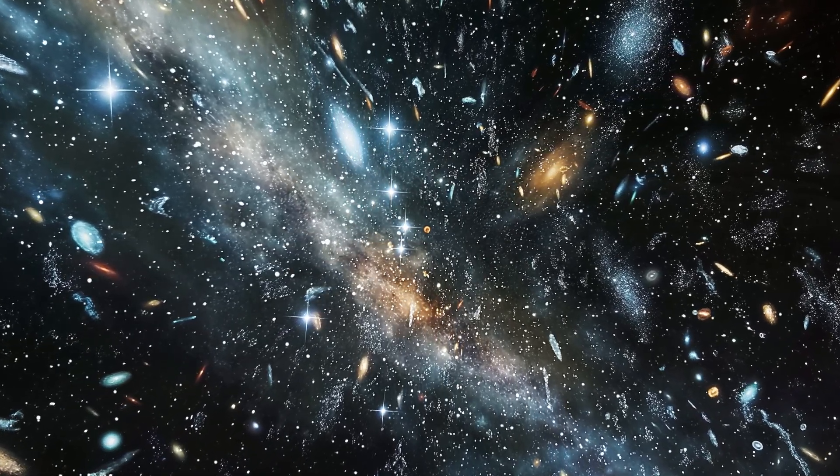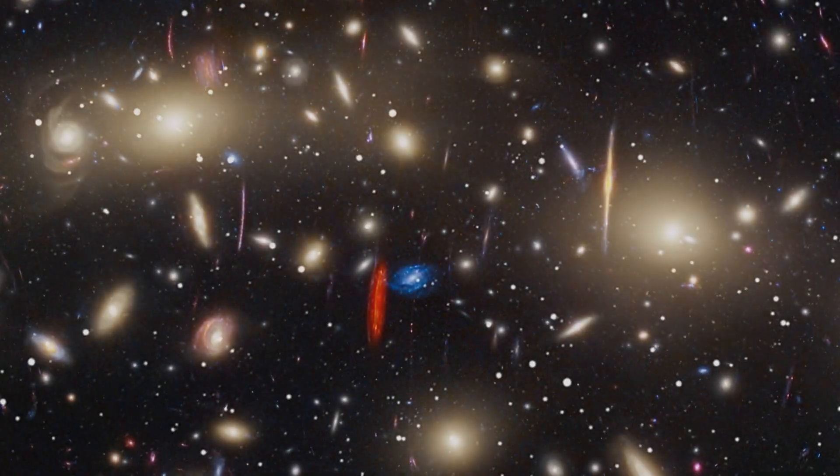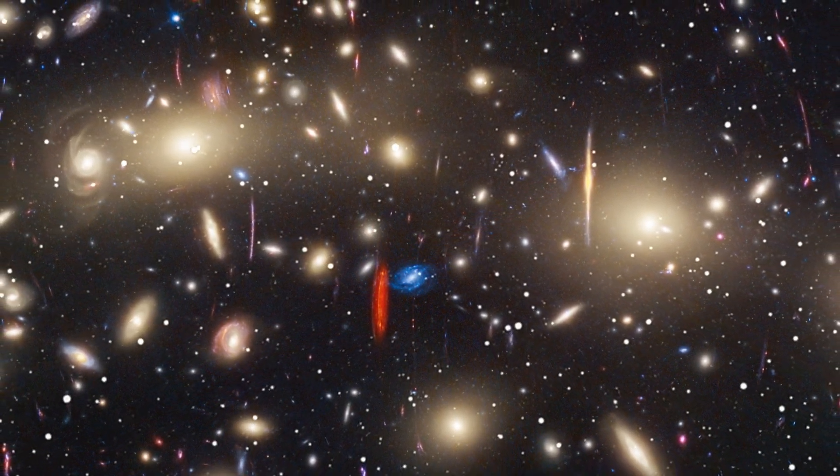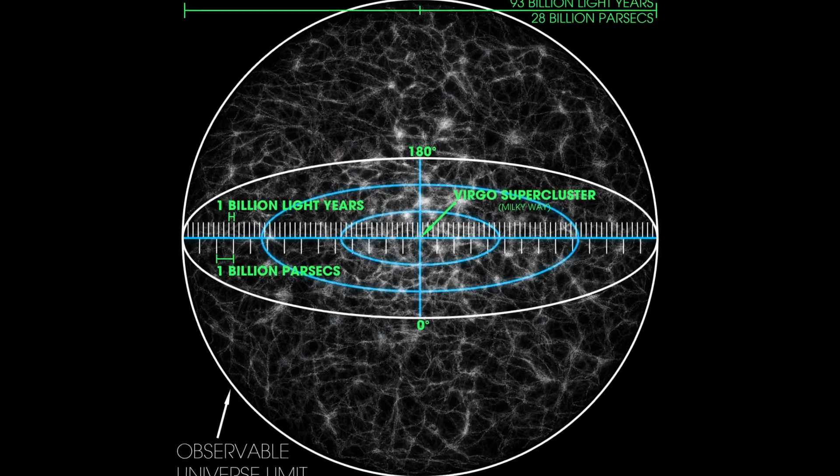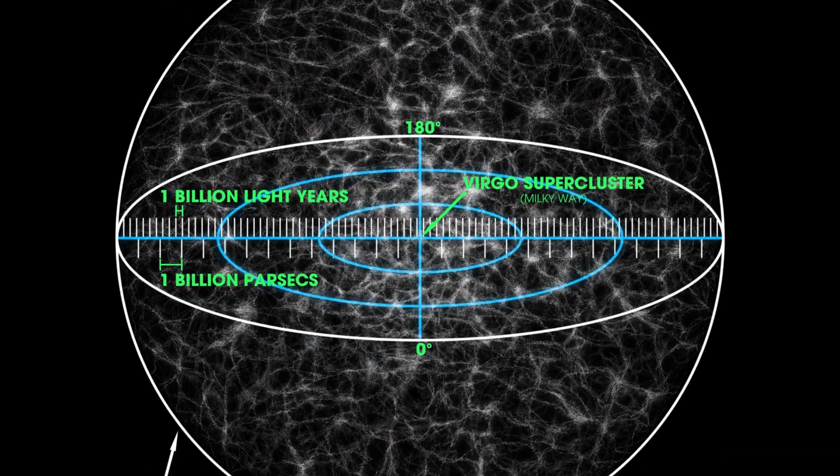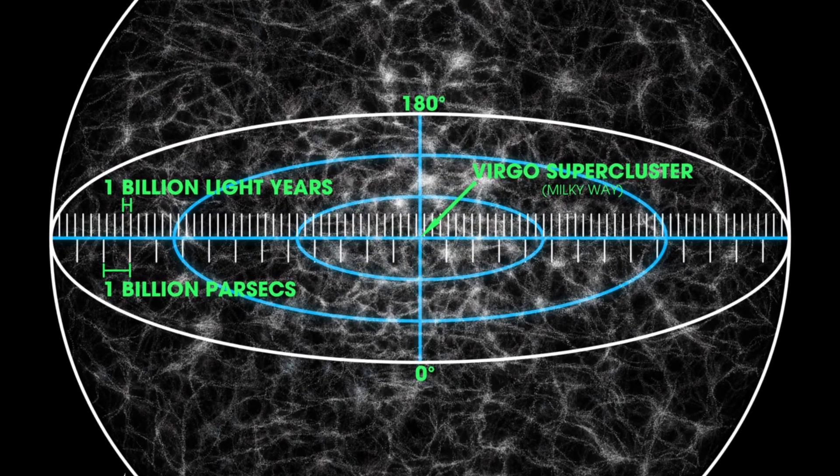In specific regions of space, some distant galaxies are moving away from us at the speed of light. This region is known as the Hubble sphere. Galaxies beyond this sphere are receding faster than the speed of light.